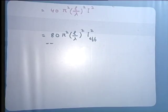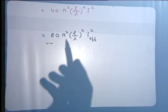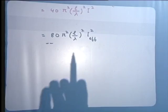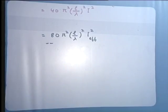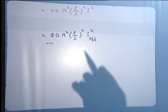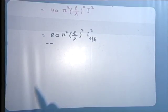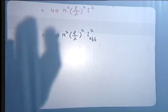We can rewrite this using the RMS value of the current rather than the amplitude. Since I_effective = I/sqrt(2), this becomes 80·pi²·(L/lambda)²·I_RMS². This says that the longer the antenna in terms of wavelengths, the more power it can radiate for the same current fed to it.